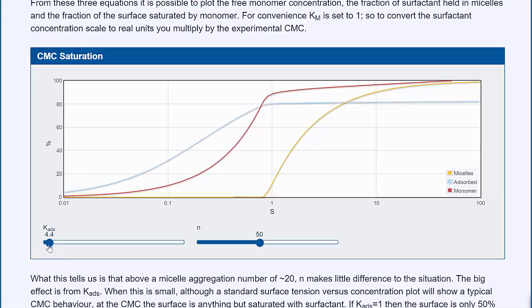The k value affects how much of the surfactant is absorbed at the surface with respect to the concentration of surfactant. So with this low k value, at low concentrations, you have very little absorbed at the surface. And with a high k value, even at low concentrations, you have a lot at the surface.